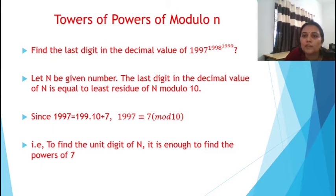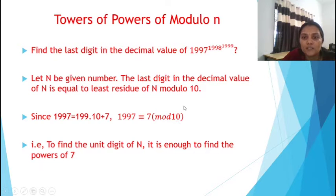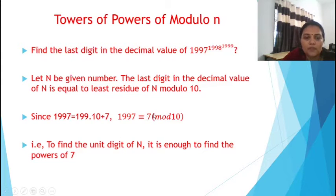First we write 1997, which is equal to 1919 × 10 + 7. So 1997 is congruent to 7 mod 10. We have to find the last digit in the decimal value of 1997 raised to 1998 raised to 1999. It is enough to find the powers of 7.